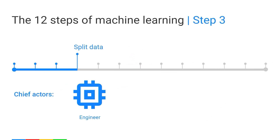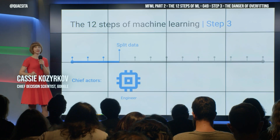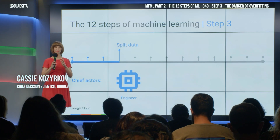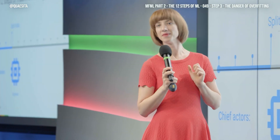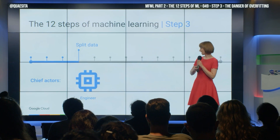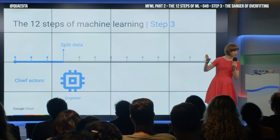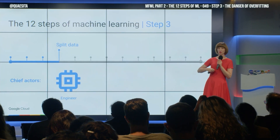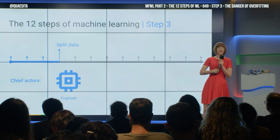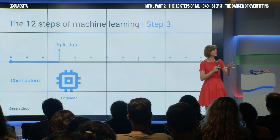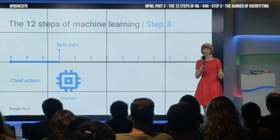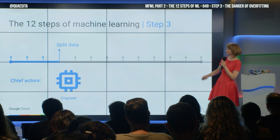Then, in step three, you are going to split your data. This is the step in which I'm going to introduce a really important concept. We are going to give a name to the scariest nightmare in machine learning. And I am going to, hopefully, if I do my job right, have you want to split data at a sort of visceral, emotional level — the idea that someone might not split data would disgust you. That's what I'm going for. Let's see if I manage it.